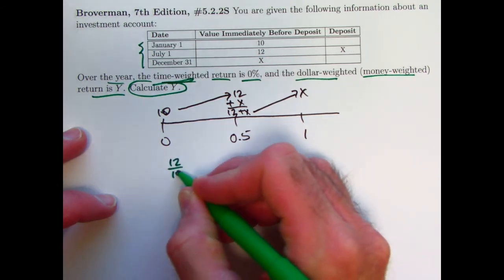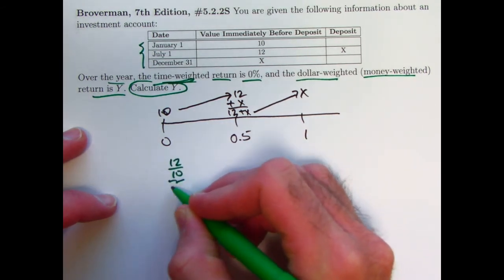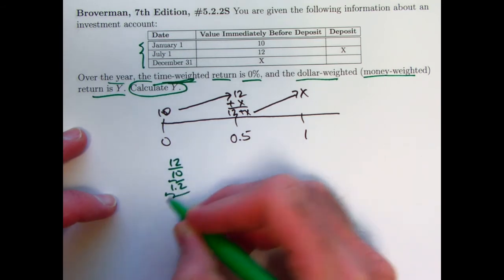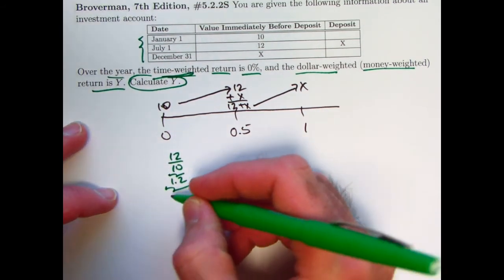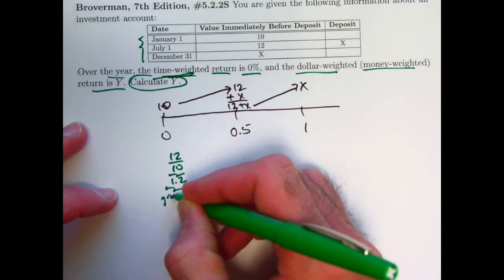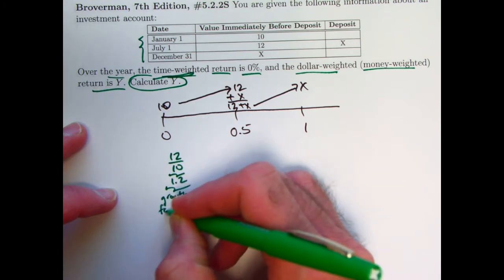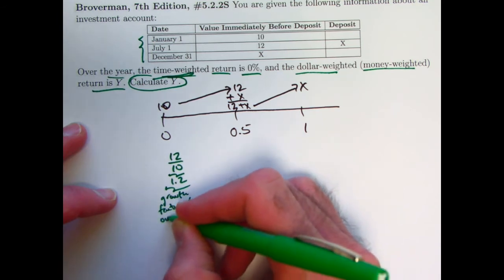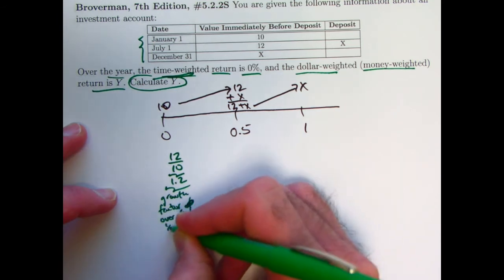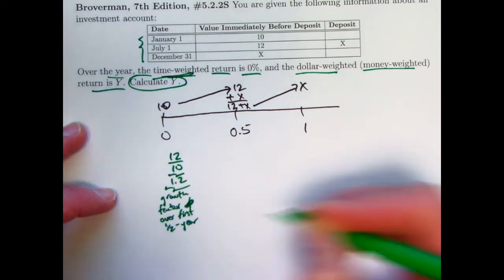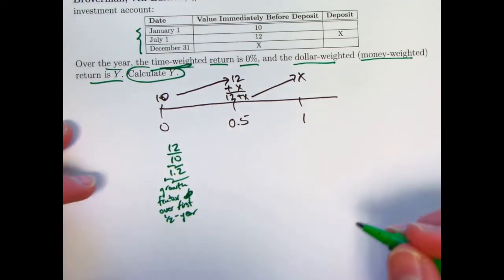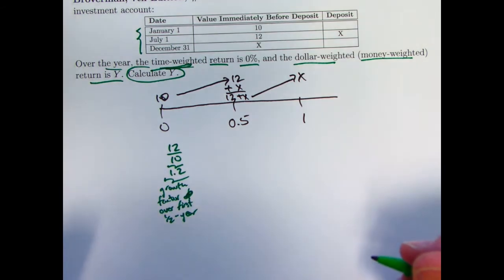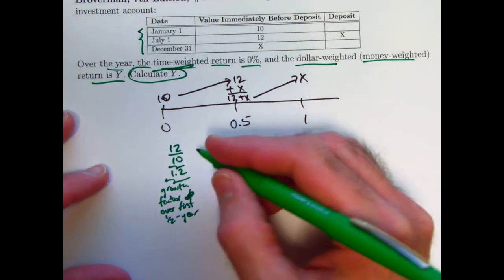It grows from 10 to 12 over the first half year. The ratio 12 over 10, or 1.2, is the growth factor over the first half year. Growth factor over first half year. In other words, it grew by 20%. The effective semi-annual rate of return here for the first half year was 20%.